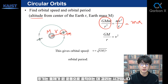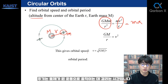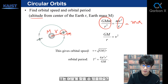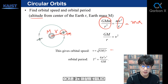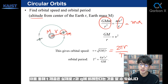We can also find the orbital period — how much time it takes for the object to complete one full circle. The speed is 2πr over T. From that, you can find that T² is proportional to r³.